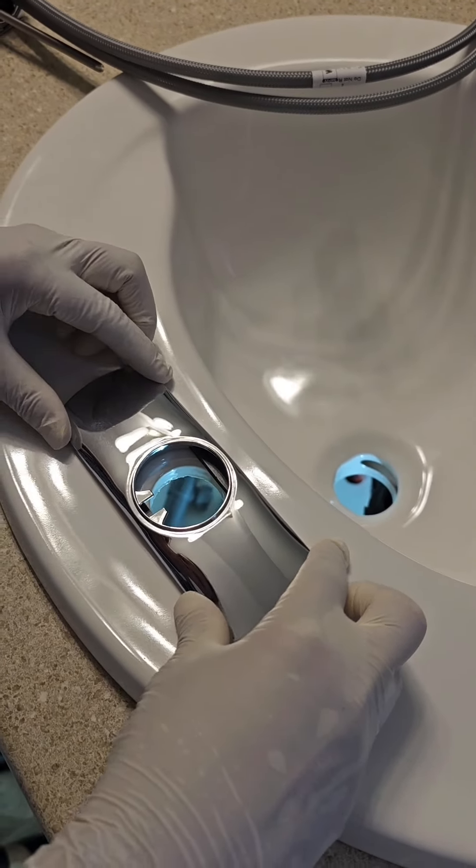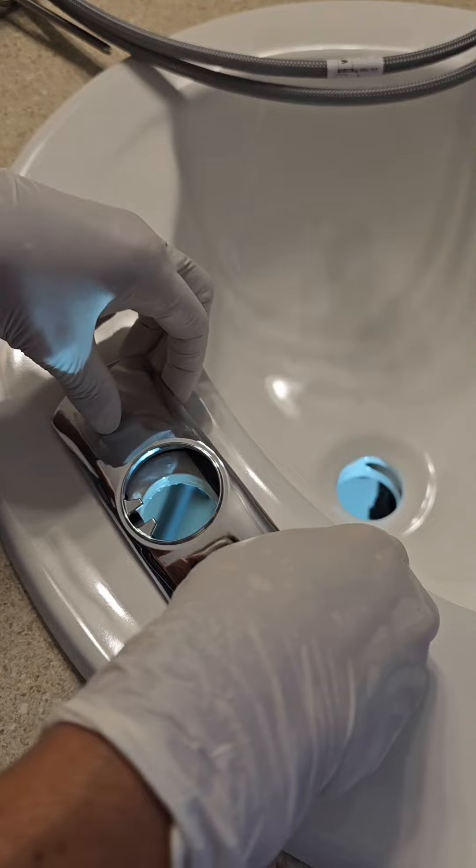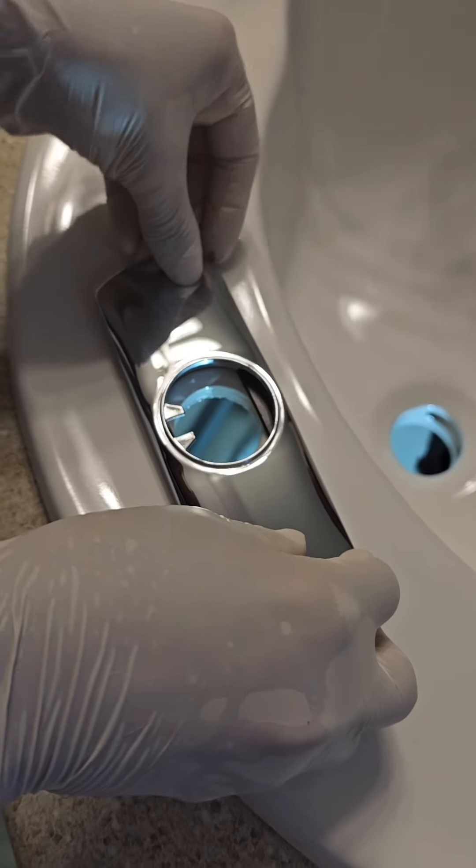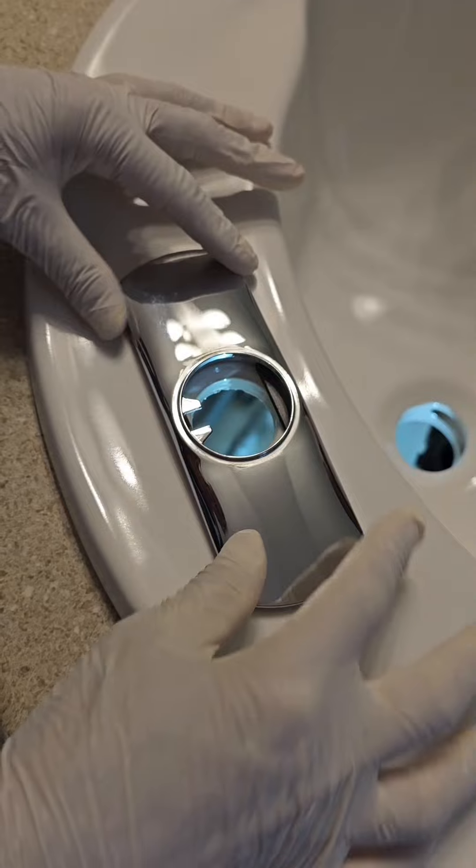First, place the rubber gasket, then position the faucet on the sink with the rubber downwards facing the sink.